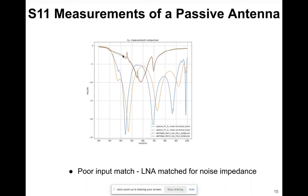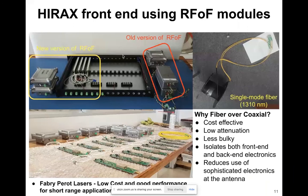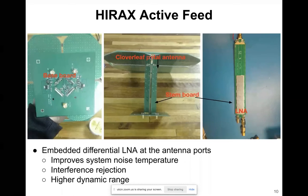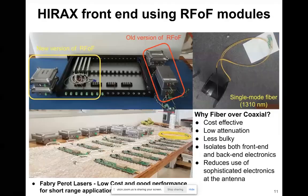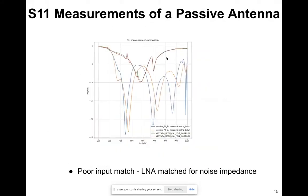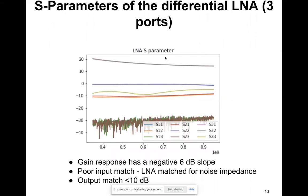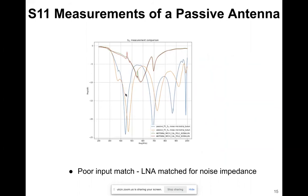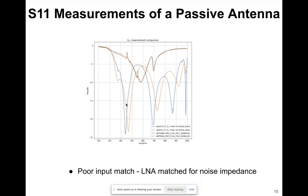What we're trying to do is measure the S11 of the cloverleaf petal. We need to transform the three-port measurements into two-port measurements and cascade them together to achieve the blue and orange traces, but that is work in progress.